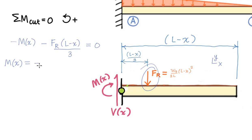And now I'm ready to plug in for F_r. So my minus sign w_0 over 2L times L minus x squared.